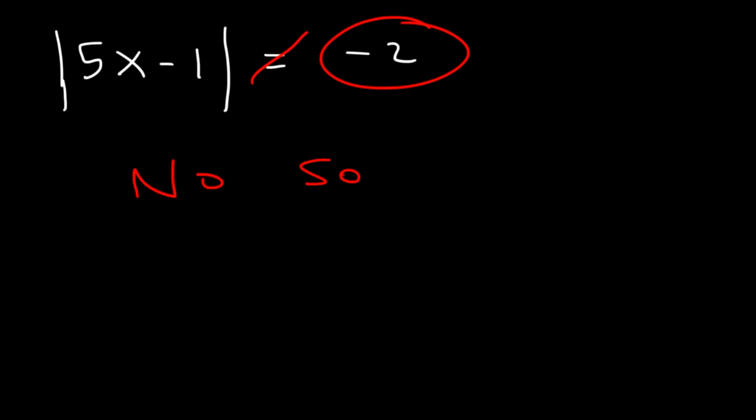Now what about this one? The absolute value of 5x minus 1 is equal to negative 2. What's the solution? The absolute value function can never equal a negative number. So there's no solution for this particular example. It can only equal 0 or a positive number.